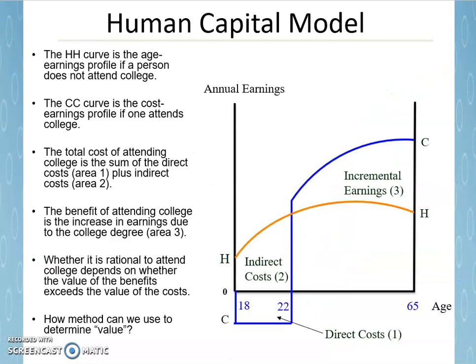We're going to build a human capital model, focusing initially on the decision to go to college, and later augment that model by looking at the firm's decision to provide on-the-job training. The human capital model is similar to what you would learn in a finance class for investing in stocks, bonds, or other financial assets, but we'll use it to understand an individual's decision to go to college.